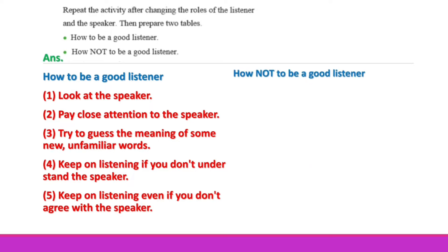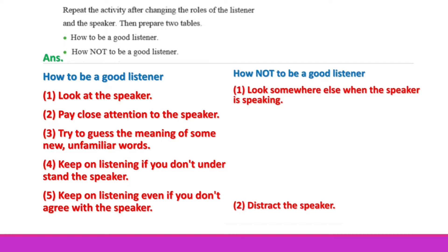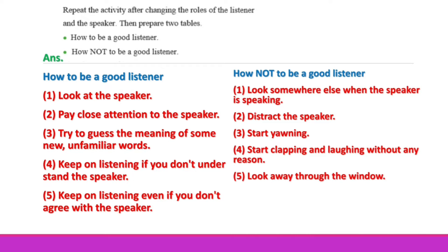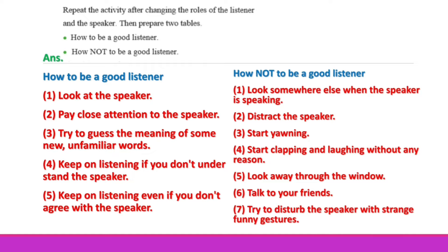How not to be a good listener: Number one, look somewhere else when the speaker is speaking. Number two, distract the speaker. Number three, start yawning. Number four, start clapping and laughing without any reason. Number five, look away through the window. Number six, talk to your friends. Number seven, try to disturb the speaker with strange, funny gadgets.